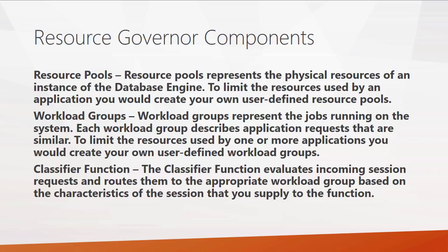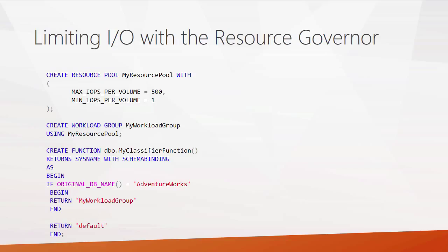Let's look at some of the code it takes to create this. When we go to limit I/O with the Resource Governor, there are a few T-SQL statements. The first is the CREATE RESOURCE POOL statement — here we're creating a resource pool called 'my resource pool' and limiting the max IOPs per volume to 500. Next, we use the CREATE WORKLOAD GROUP statement to create 'my workload group', pointing back to that resource pool. At the bottom is our classifier function, called 'my classifier function', which looks at the original DB name and matches it to AdventureWorks — routing those requests to my workload group, and all others to the default workload group.